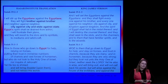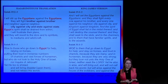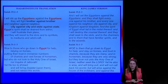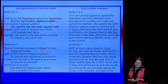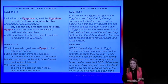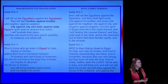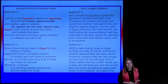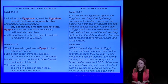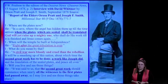'Yet he too is shrewd and will bring disaster upon them and not retract his words.' Isaiah 31: Woe to those who go down to Egypt for help, putting their trust in immense numbers of chariots and vast forces of horsemen, but who do not look to the Holy One of Israel nor inquire of Jehovah—he will bring disaster upon them and not retract his words.